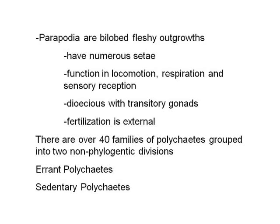The polychaetes are primarily dioecious and many of them have transitory gonads, as seen in the palola worm discussed at the start of the section on annelids. Polychaetes are a very large group with more than 40 families. We will look at two non-phylogenetic, non-taxonomic groups formed on the basis of habitat and lifestyle: the errant polychaetes and the sedentary polychaetes.